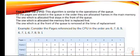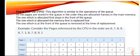The first algorithm is First In First Out page replacement. This algorithm is similar to the operations of a queue. All the pages are stored in the queue in the order they are allocated frames in main memory. The one which is allocated first stays at the front of the queue and is replaced first. The one at the front of the queue is removed at the time of replacement.